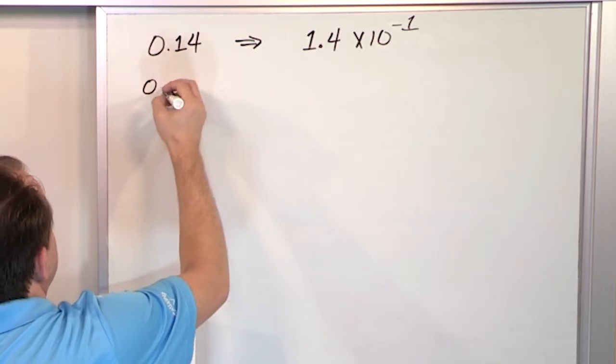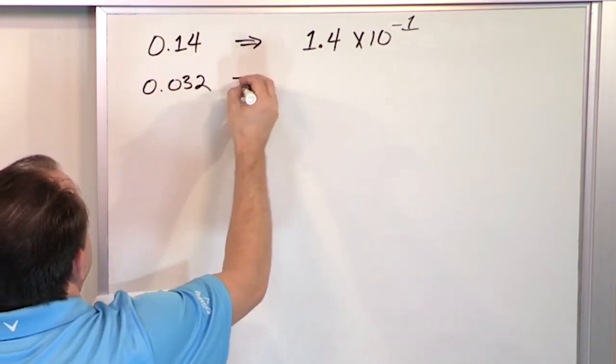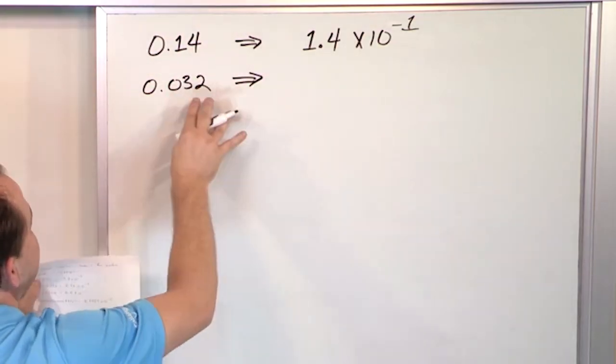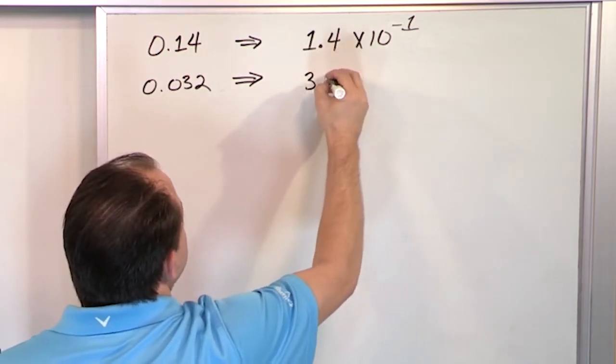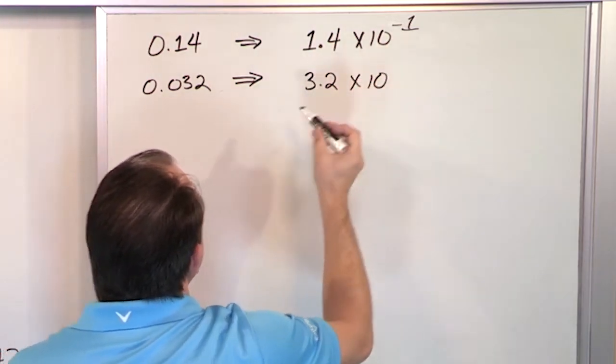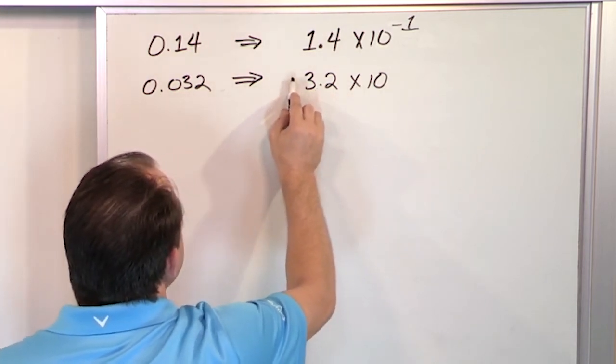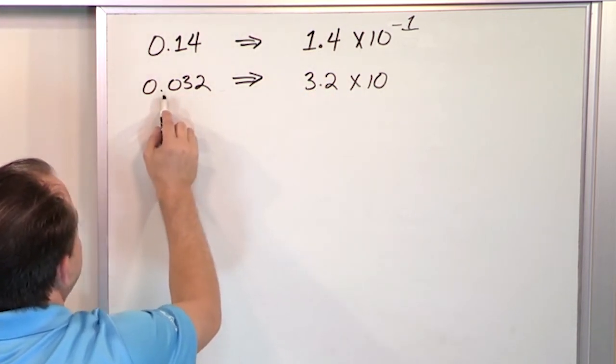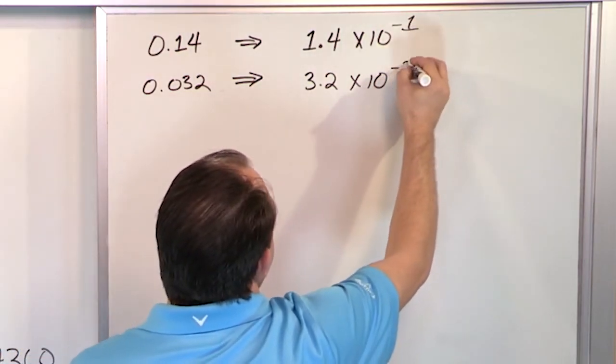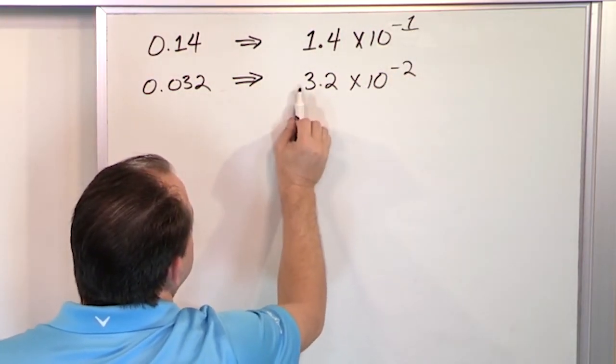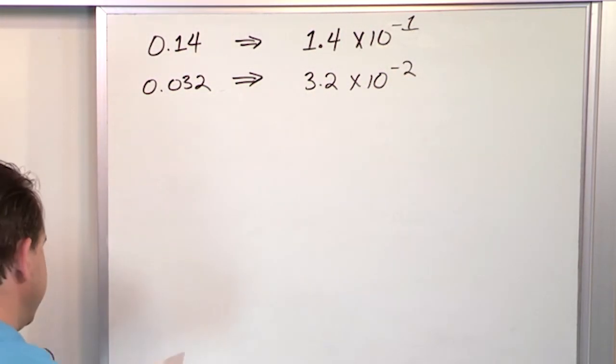Let's go to the next example, 0.032. How would I write that? Well, I ignore everything except for these digits. I just write down 3.2 times 10. I don't want to put a positive number here. That would make the number bigger. I want to shift the decimal one and then one more spot because I have a zero here. So it's going to be minus two. So I start here, one, and then one more gives me that. So it's 10 to the minus two.